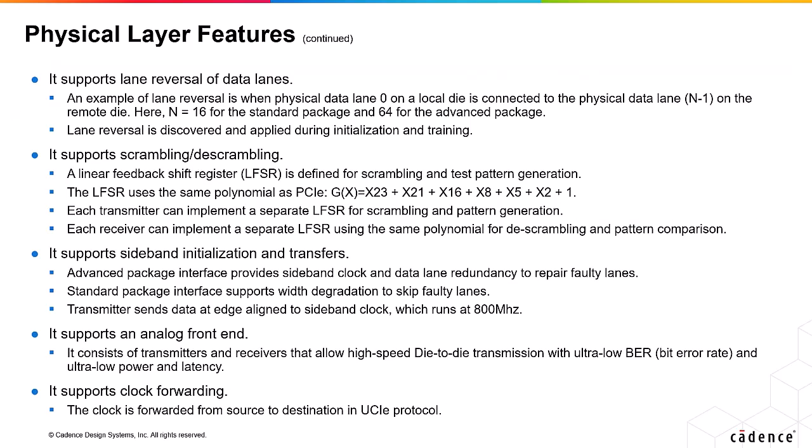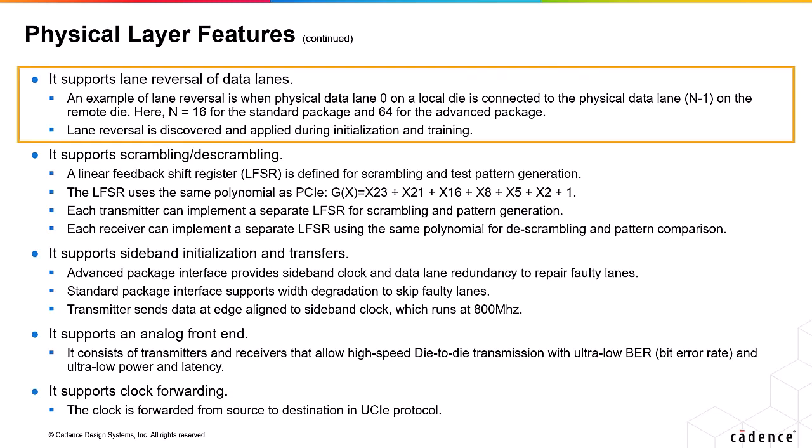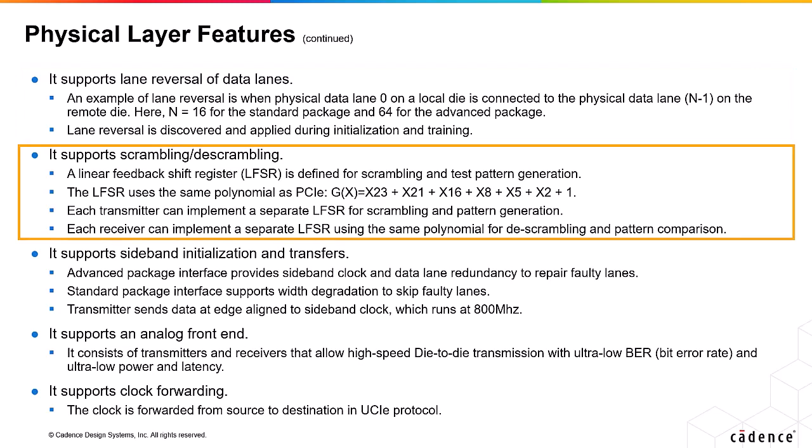Some more physical layer features are described here. It supports lane reversal of data lanes to ease board routing. For example, using the lane reversal feature, physical data lane 0 on the local die is connected to physical data lane n-1 on the remote die, where n is 16 for the standard package and 64 for the advanced package. Lane reversal is discovered and applied during initialization and training. It also supports scrambling and descrambling. A linear feedback shift register (LFSR) is defined for scrambling and test pattern generation, using the same polynomial as the PCIe polynomial.